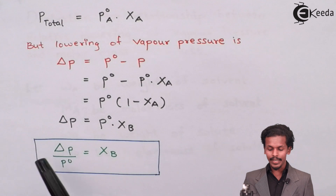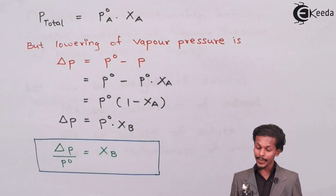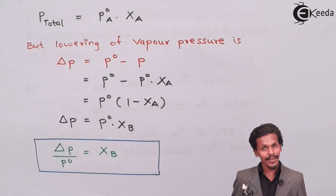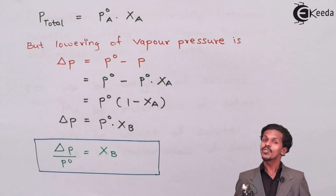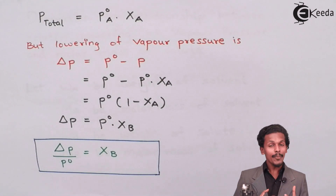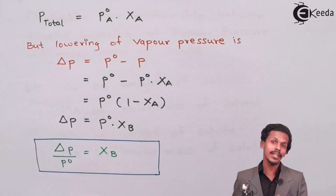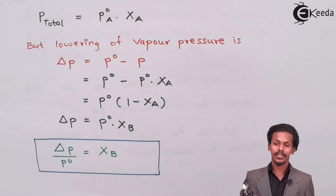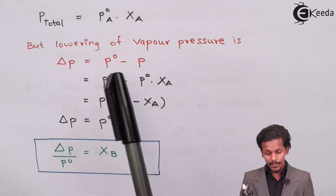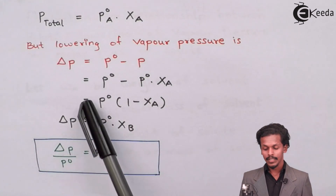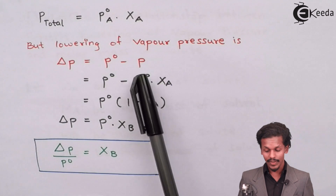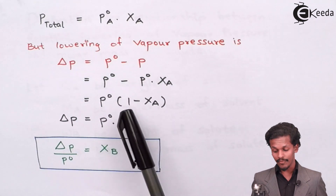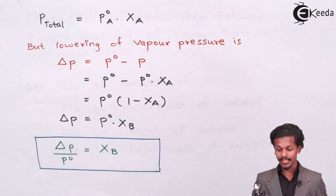We also know that the lowering of vapor pressure is denoted by delta P, where delta P equals P0 minus P — P0 being the vapor pressure of pure solvent and P being the vapor pressure of the solution. Now, we substitute the total vapor pressure expression for P, giving us delta P equals P0 minus P0·XA, which equals P0 times (1 minus XA).